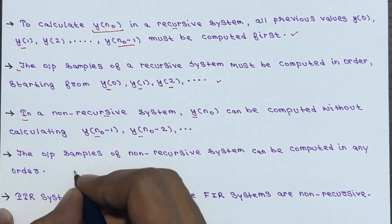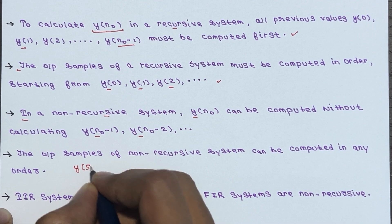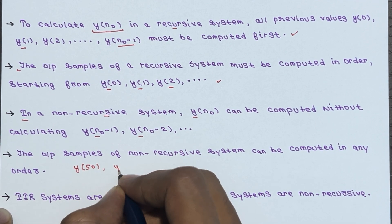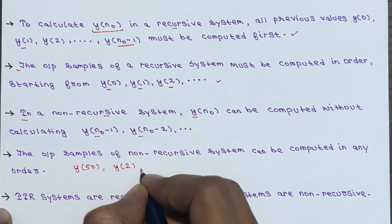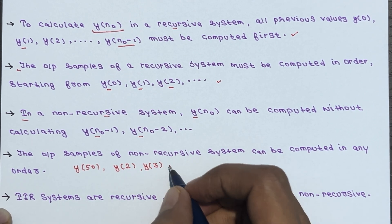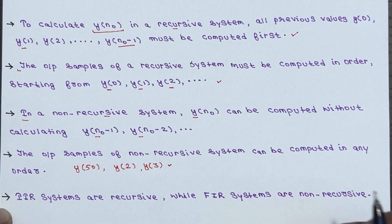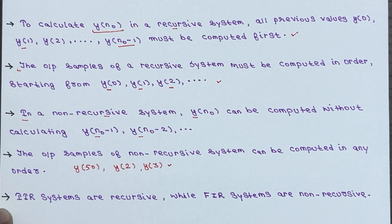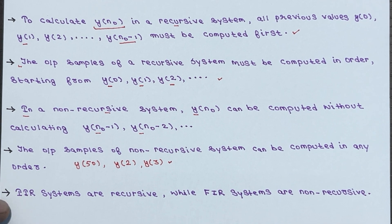For non-recursive systems, the output samples can be computed in any order. If you want, you can calculate y of 50 first, or y of 2 first, or y of 3 first — because the non-recursive system output y of n is not dependent upon past output values; it only depends on the present and past inputs.